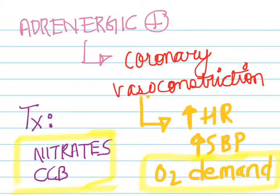How do we try to treat this? With nitrates and calcium channel blockers. These are the medications that will vasodilate the coronaries and thus relieve the myocardial oxygen demand. Because of this, the heart will relax and the chest pain will be relieved, just like any other angina.